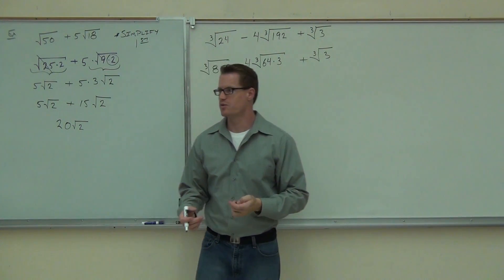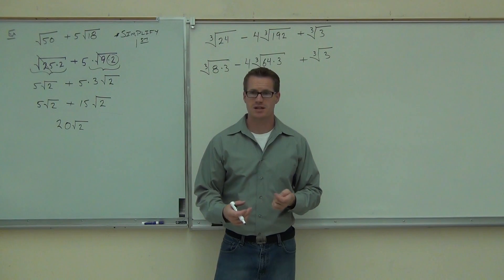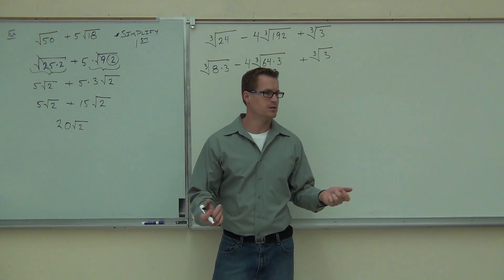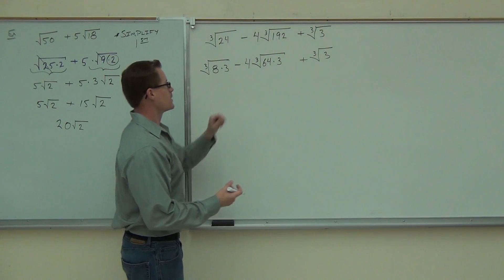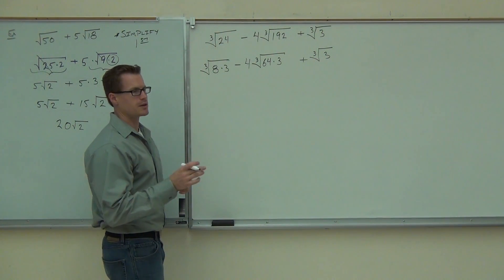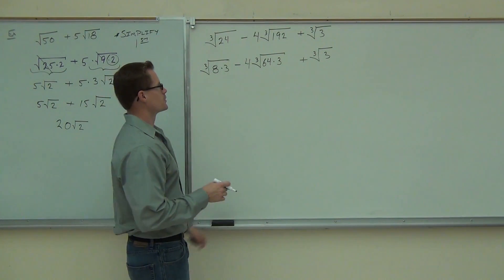Alright. So we break that up as 64 times 3. It's kind of nice with cubes, right? Because there are only a few of them you can check. If it's not 8, 27, 64, or 125, well, you're done. That's kind of nice. So we're going to break that up. We got it. Now we simplify. Just be careful. Don't lose anything here. Don't lose your 4. Don't lose your cube root.